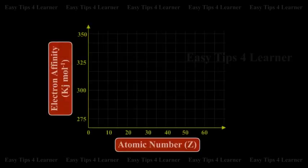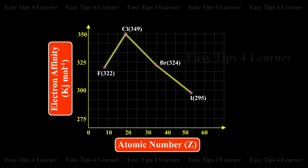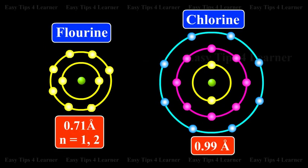Electron Affinity Deviation from Normal Trend. The electron affinity of fluorine is less than that of chlorine. Although electron affinity of elements decreases down the group, fluorine has less electron affinity than chlorine because the size of the fluorine atom (0.71 Angstrom) is very small and has only 2 shells.